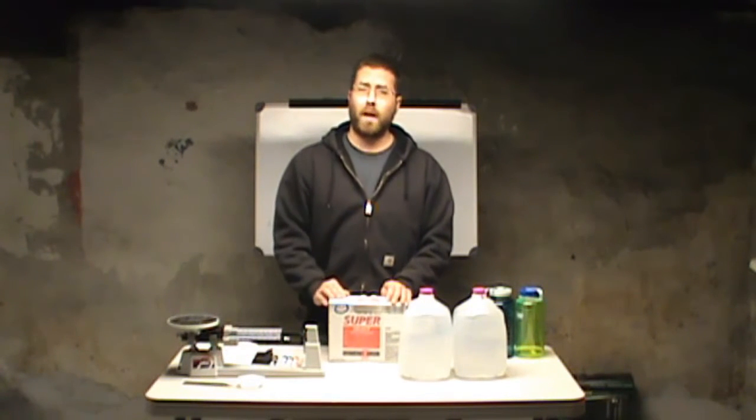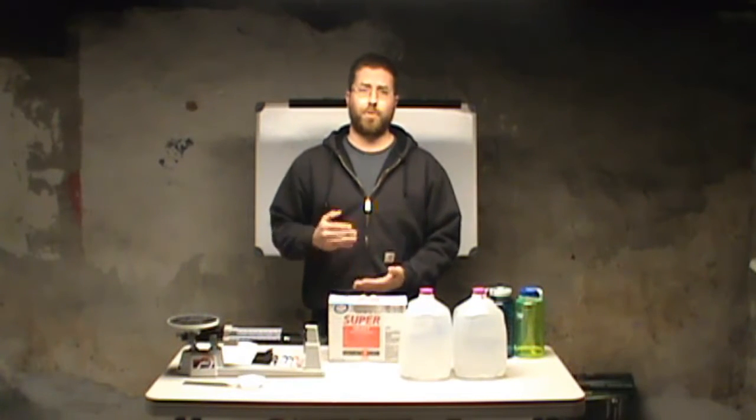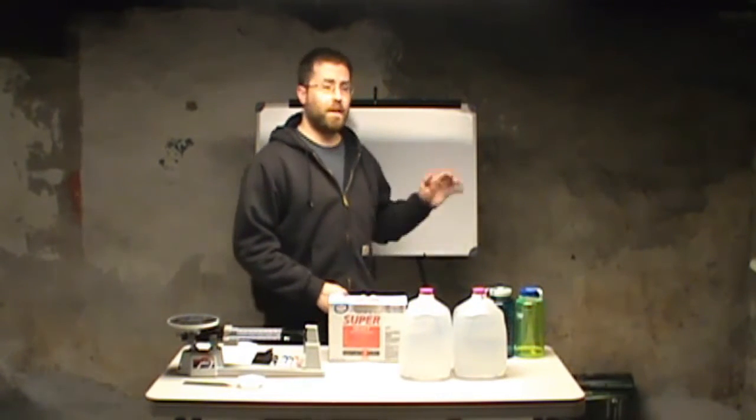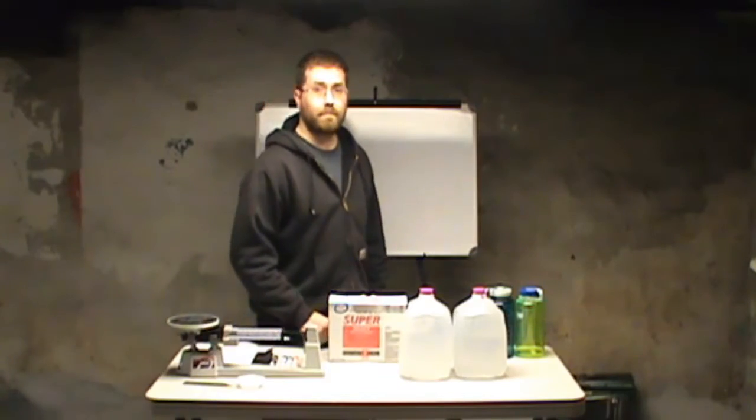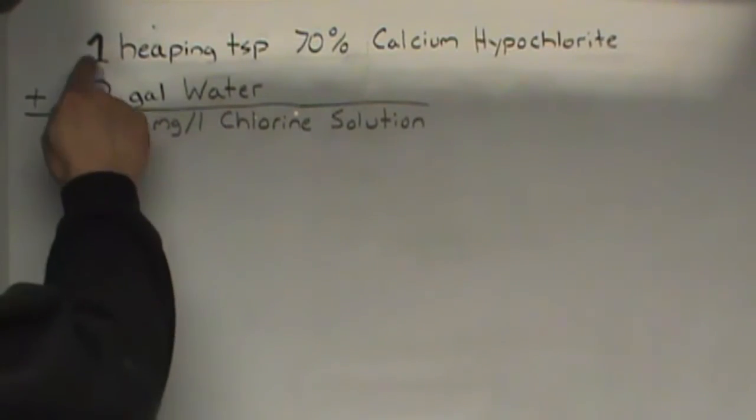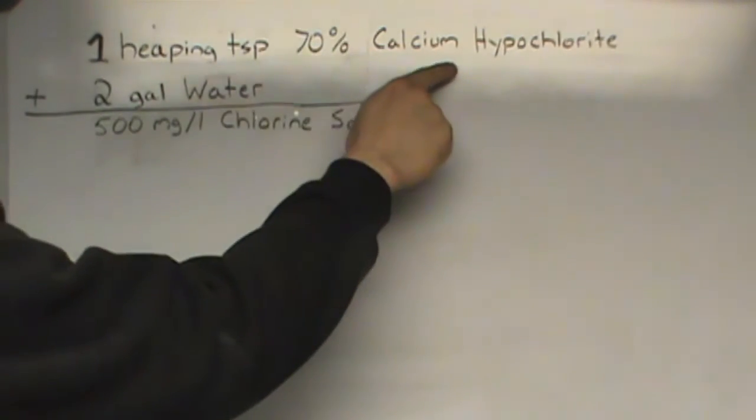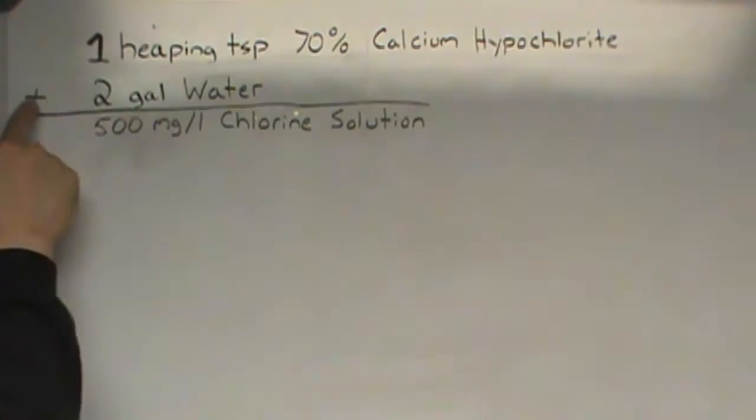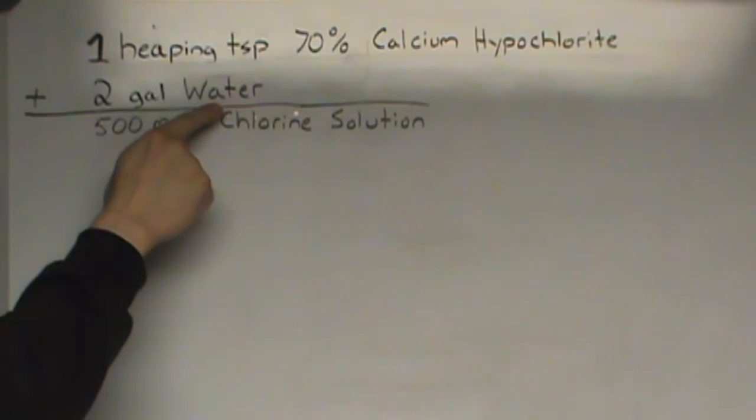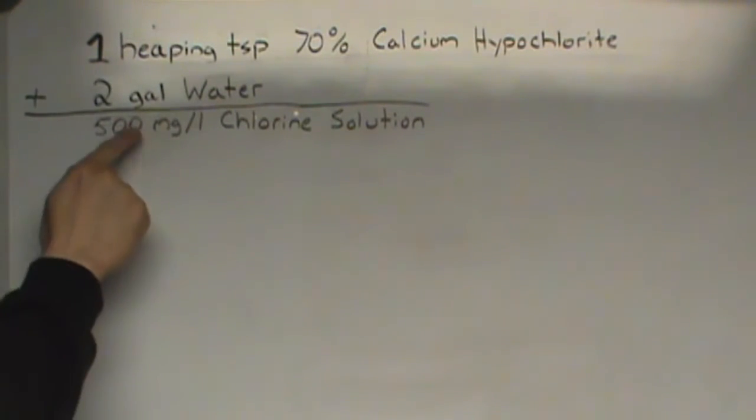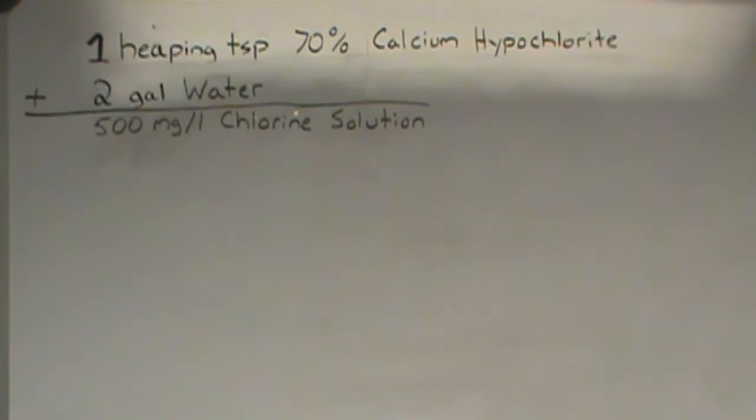Now that's an awful lot of material to digest so what we're going to do is we're going to translate that in English. I'm going to put that on our marker board back here. They specify that we must take one heaping teaspoon of 70% calcium hypochlorite plus two gallons of water and that will equal a 500 milligram chlorine solution.